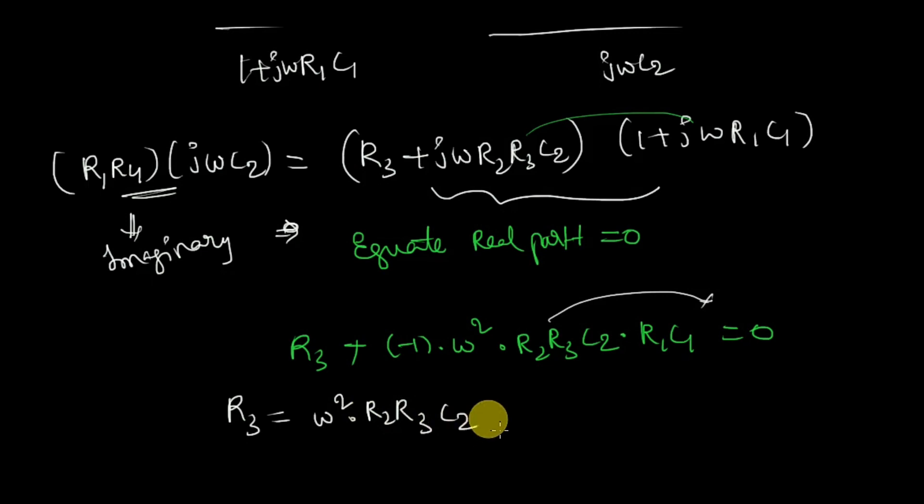So from this, omega equal to 1 by, square is there, so root R1 R2 C1 C2. So finally you are here with the expression for frequency. Similarly you can solve for other parts, but that is not required. Our aim is to find the frequency of operation using Wien Bridge.